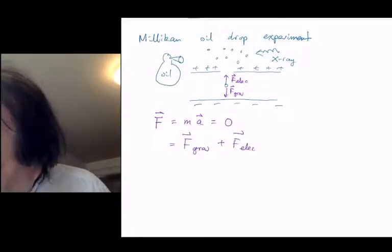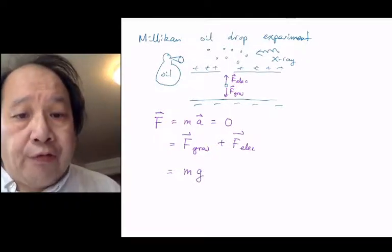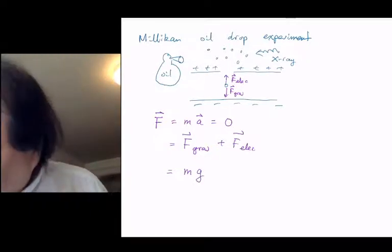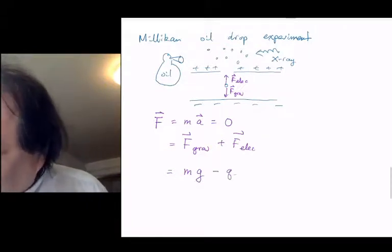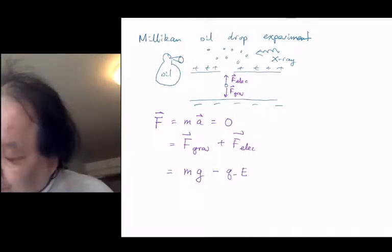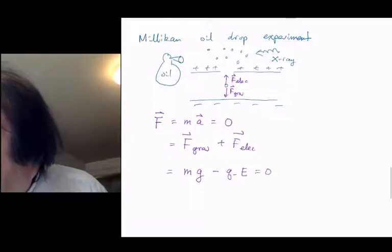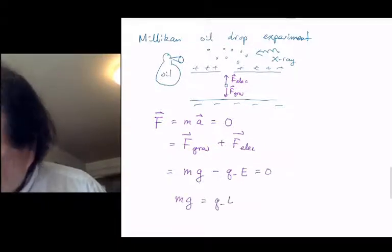The gravitational force is mg, and the electrostatic force is in the opposite direction, so that's going to be a minus sign: q of the electron times the electric field E. That's equal to zero, so he knows that mg equals q of the electron times E.